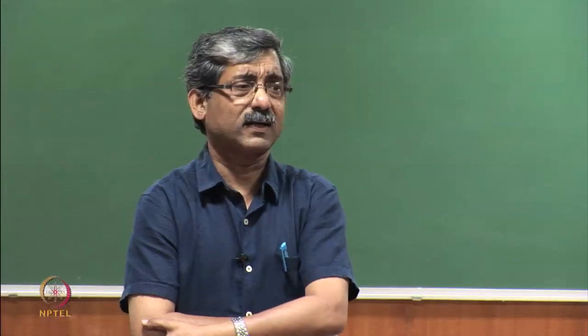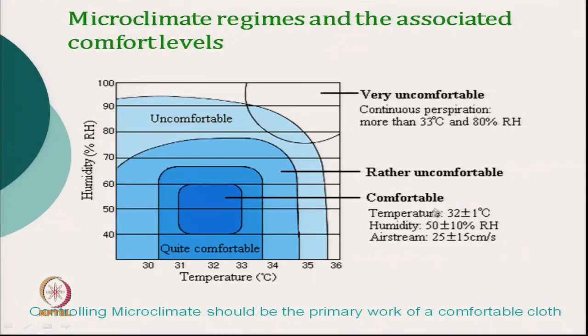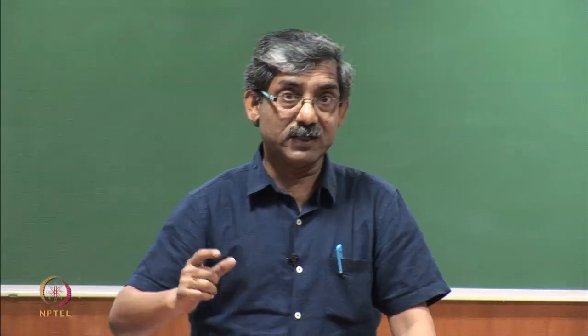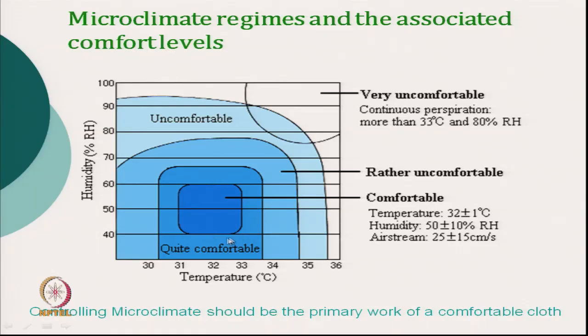Our target microclimate should be 32 plus or minus 1 degree Celsius — that is the temperature we should maintain in our microclimate. For example, if environmental temperature is 25 degree Celsius, we feel comfortable, and at that condition, the microclimate temperature is around 32 to 33 degrees. This is the zone where microclimate temperature is most comfortable. The humidity of the microclimate should be kept at 50 plus or minus 10 percent — that is, 40 to 60 percent relative humidity.